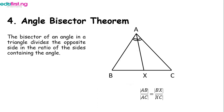The fourth theorem is the angle bisector theorem. It states that the bisector of an angle in a triangle divides the opposite side in the ratio of the sides containing the angle. So in triangle ABC, if line XY bisects the triangle, then AB/AC equals BX/XC.